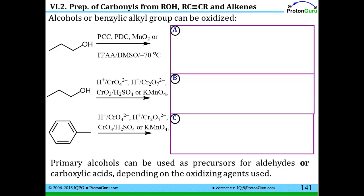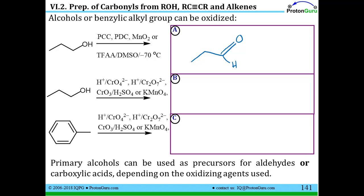A difference comes when you take a primary alcohol. Because there are weaker oxidizing conditions and more strongly oxidizing conditions. The more weakly oxidizing conditions include PCC, PDC, manganese dioxide, and the Swern oxidation conditions. You'll see there are two H's on the carbonyl carbon. The more weakly oxidizing conditions only take off one of those two. If I redraw that structure with the H missing, you can see that we can only make one new bond to oxygen without violating the carbon octet rule. So when you take a primary alcohol with one of these more weakly oxidizing conditions, you're only able to make an aldehyde.